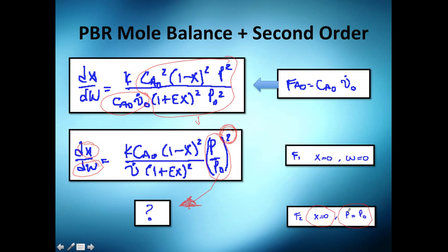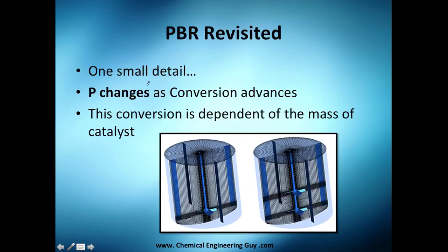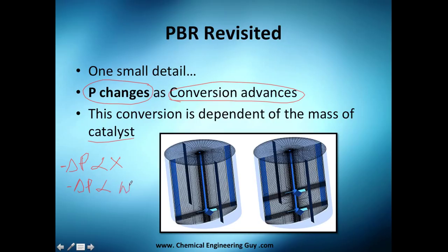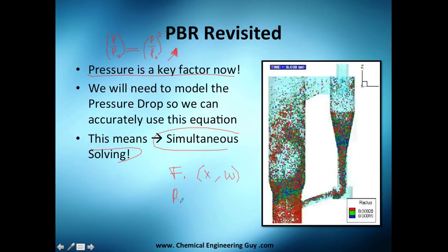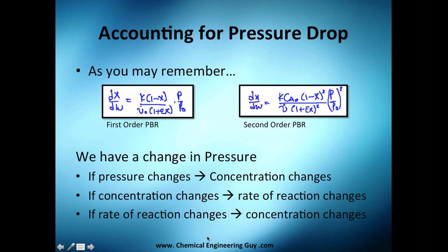So we need a model for the pressure drop. There's one small detail: pressure changes as conversion advances, and this conversion is dependent on the mass of catalyst. So pressure drop is dependent on conversion, and since conversion is dependent on catalyst used, pressure drop is also dependent on catalyst mass. This means we will have two functions — a function of X and W. We're going to find a function that accounts for both X and P, and we'll see that equation in the next video.